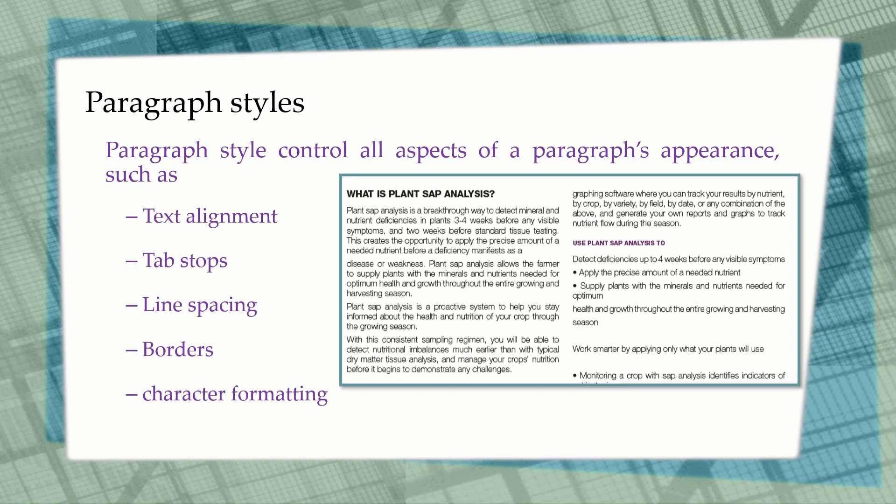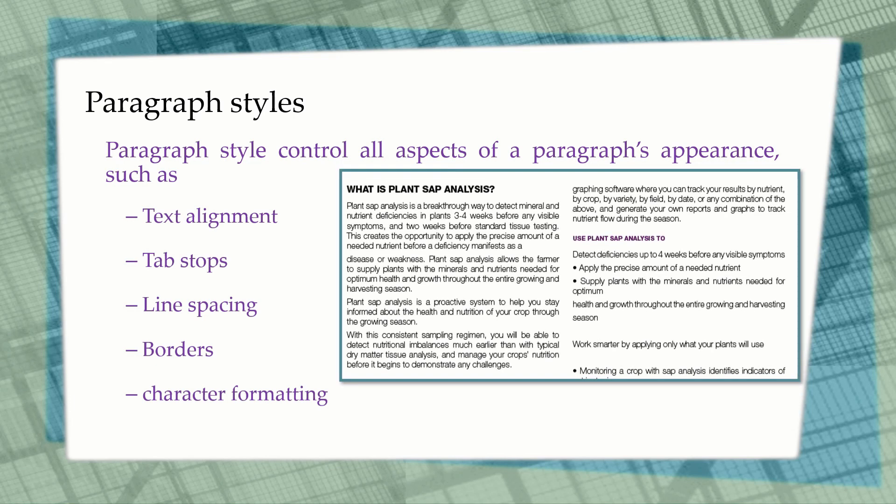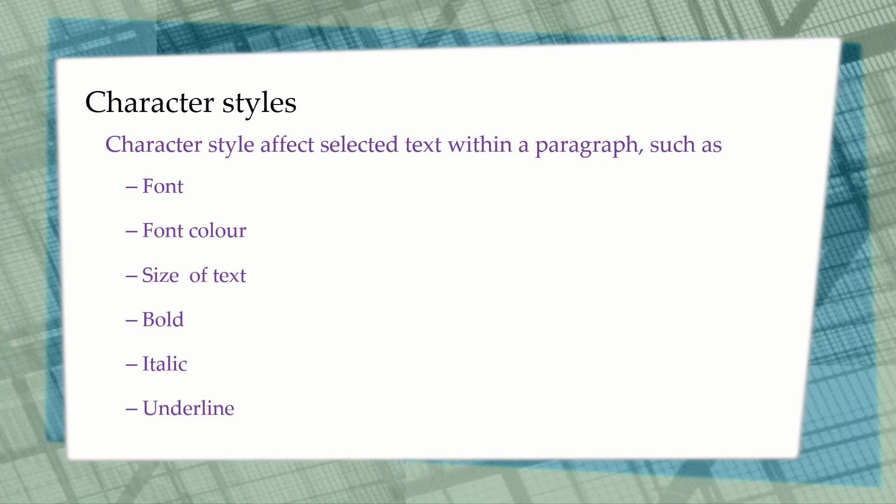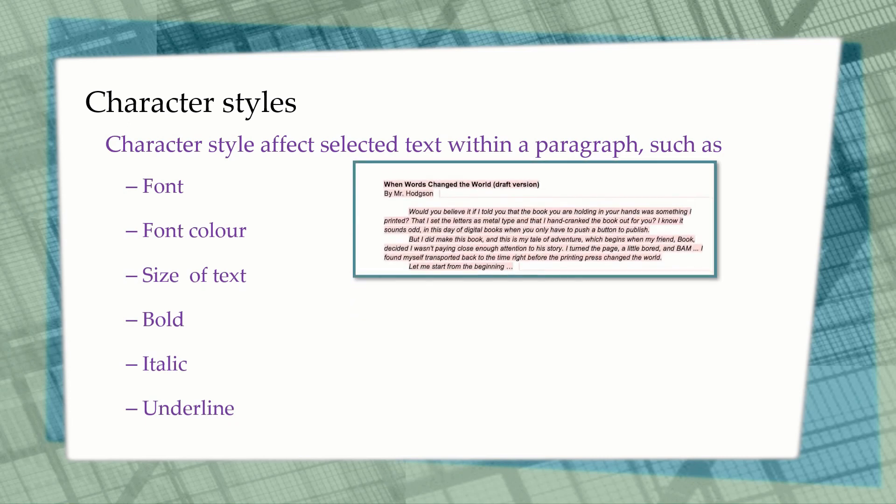The third type is the character style. Character styles allow you to customize specific text in a paragraph—it can be just a word, a sentence, or more than one sentence. They affect selected text within a paragraph, such as the font, color, size, whether it's bold, italic, or underlined. You may want to highlight some specific text, as you see in this picture.